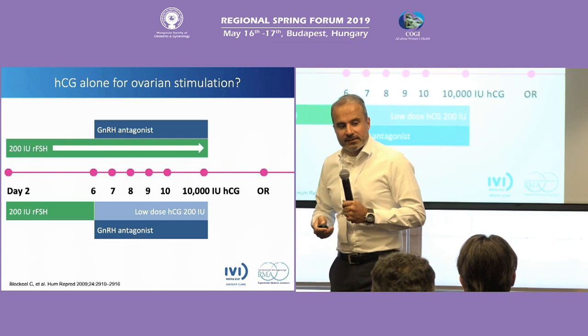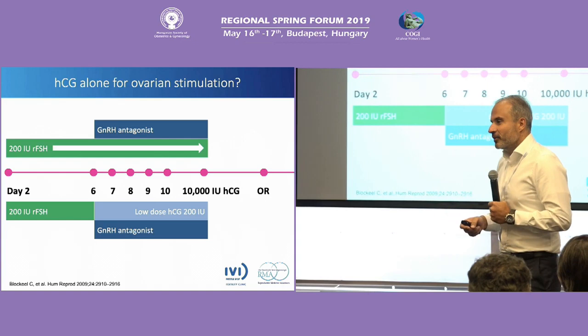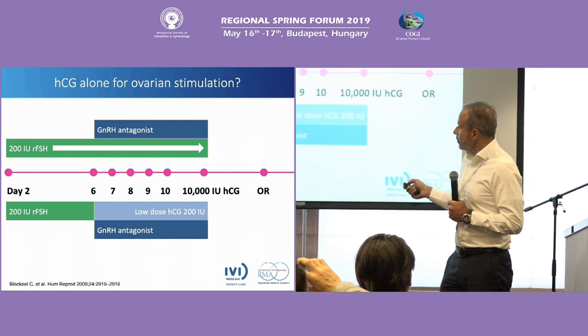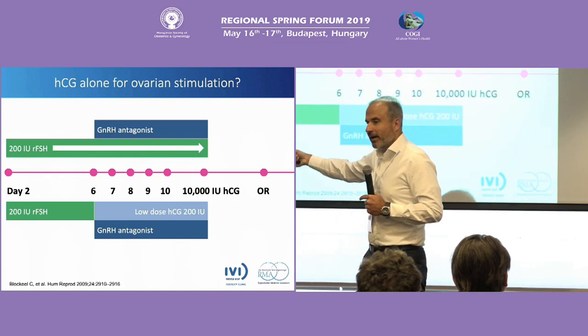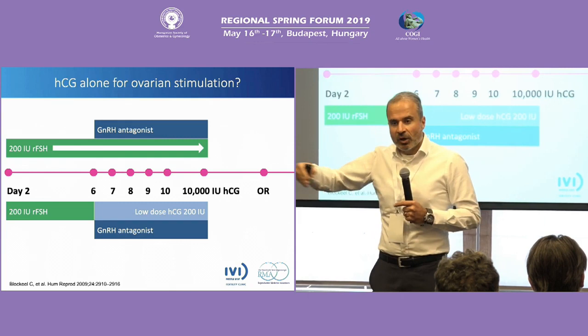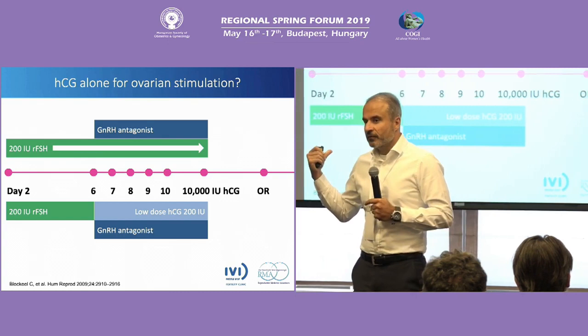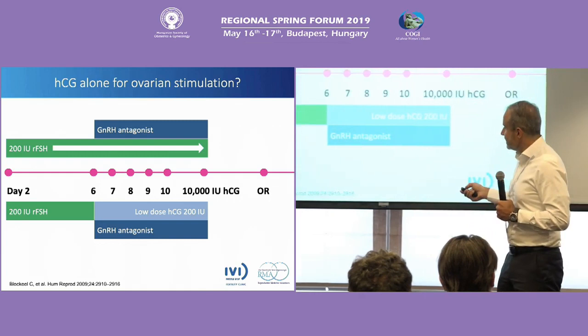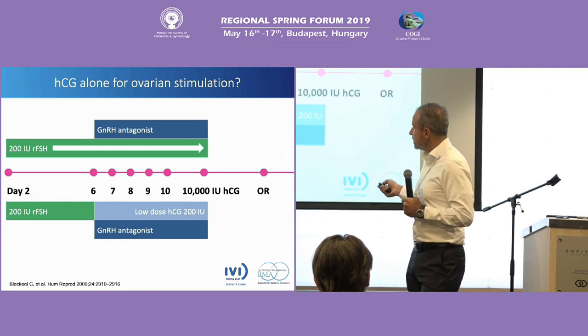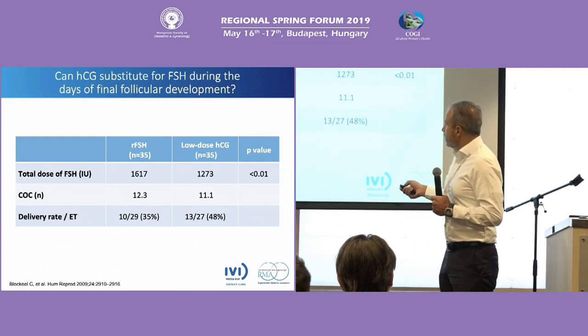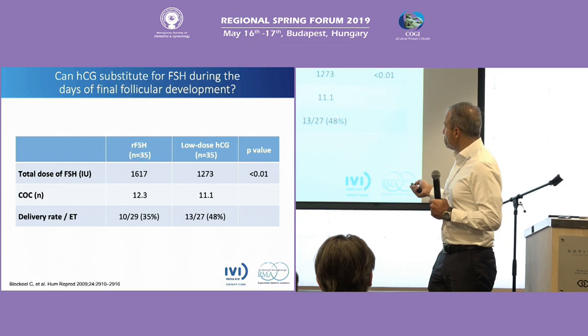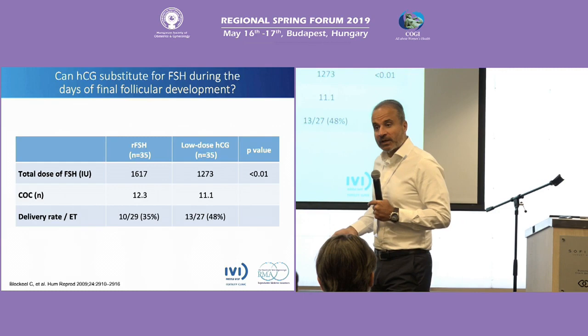Our colleague Christophe Blockeel published his paper following Filicori's. He said: we know that at the end of the follicular phase, LH receptors are more active. So instead of continuing FSH, once the follicles reach a certain size — and we had this debate with Xeon: if you stop FSH, estradiol will drop — it's not true, because FSH receptors towards the end are not very active; it's the LH receptors which are active. What he did: FSH plus FSH then low-dose hCG from day six onwards. Number of oocytes comparable, significantly lower FSH consumption, and the delivery rate per transfer was extremely good.